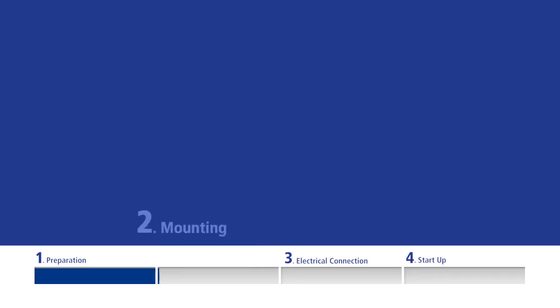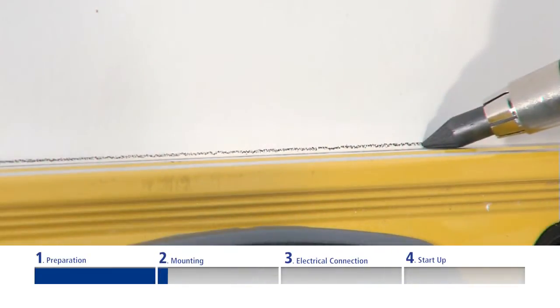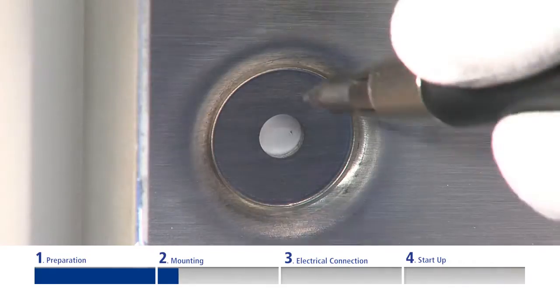Mounting. Using the spirit level, draw a horizontal line on the wall at eye level. Line up the wall brackets with it and mark the drilling holes.